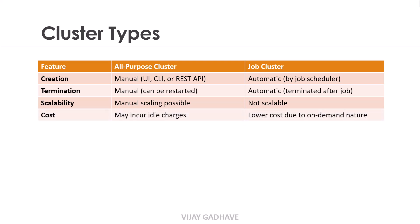The next feature is Cost. The All-Purpose Cluster may incur idle charges if the cluster is running but not being used. As this cluster is managed manually, users need to terminate it when idle. Whereas Job Clusters are lower cost, as they are created on demand for the duration of the job and terminated once the job is done, which reduces time and charges.